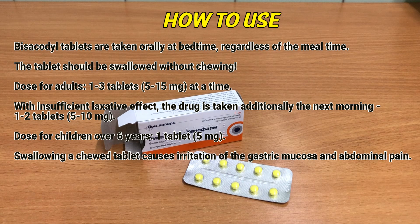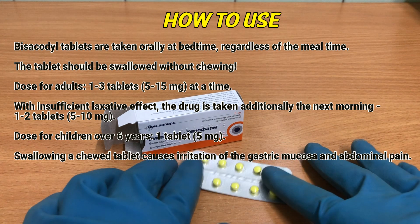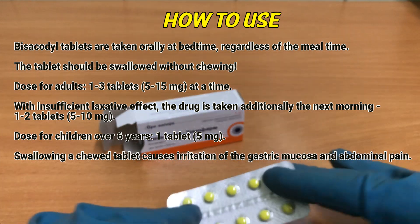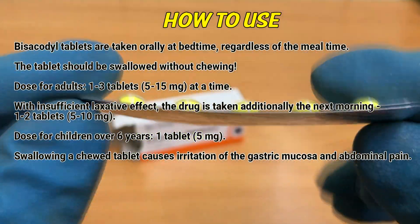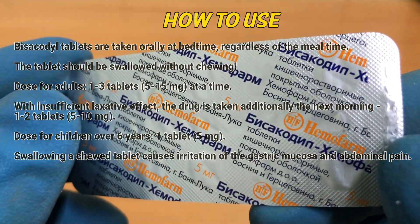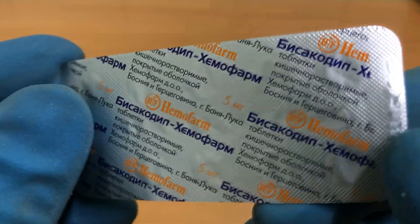Dose for children over 6 years: 1 tablet, 5 mg. Swallowing a chewed tablet causes irritation of the gastric mucosa and abdominal pain.